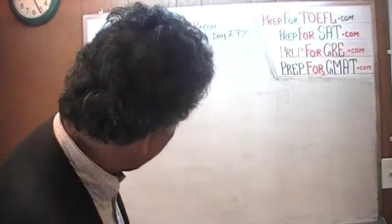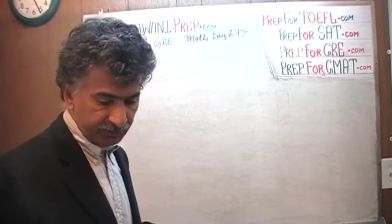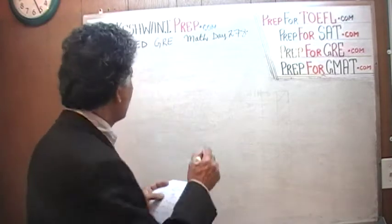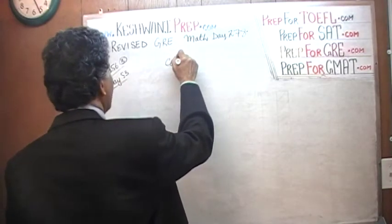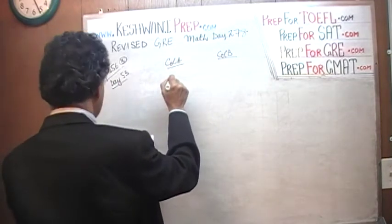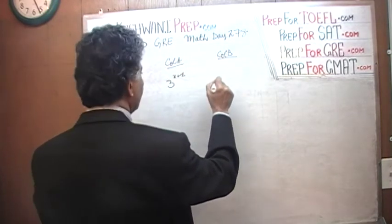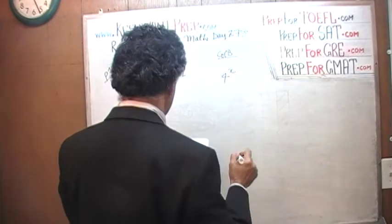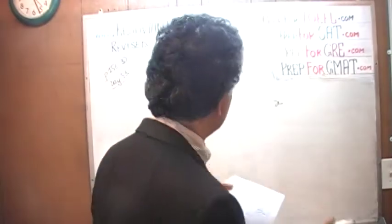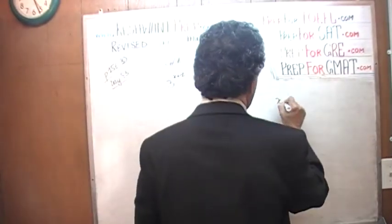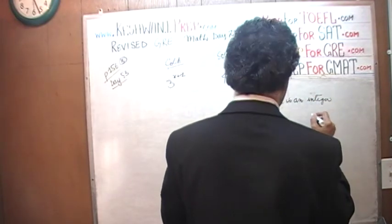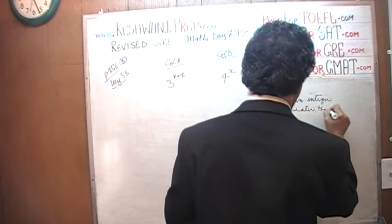This problem we are doing here we already solved on day number 53. Here I'm just going to do it at a faster pace. We are given two quantities: Column A is 3 raised to x plus 1, versus Column B which is 4 raised to x. We are told that x is an integer greater than 1.